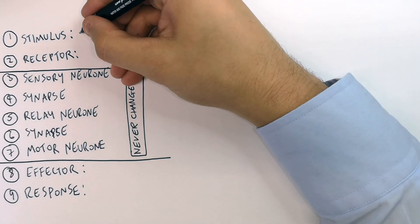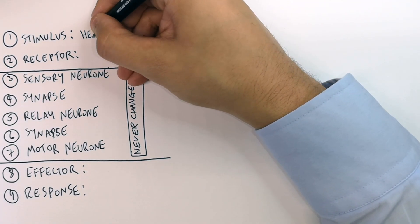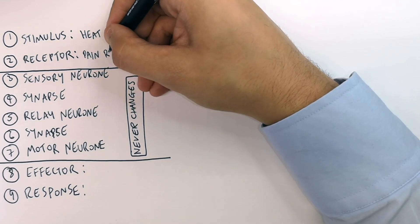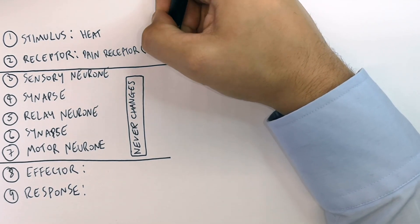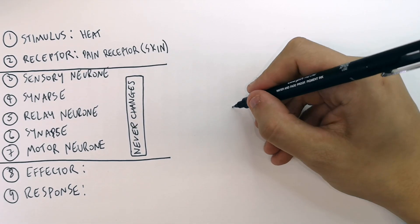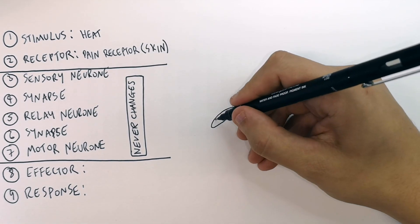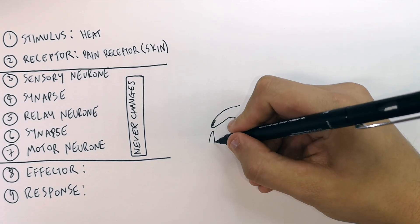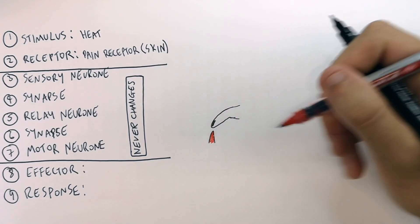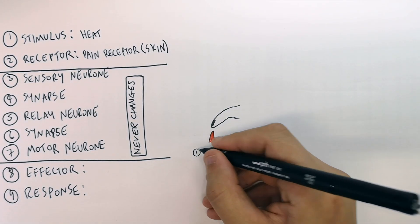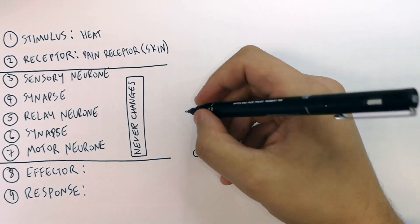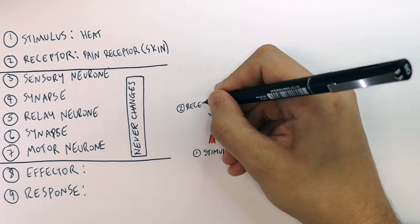In this example, we're going to give you a stimulus which is heat, and the receptor is going to be pain receptors in the skin. So we're gonna draw this out. We're firstly gonna draw a hand. Inside the skin is where you're gonna find pain receptors, and they're gonna be stimulated by the heat of a flame. So the stimulus is going to be, in this situation, the heat from the flame, and the receptors are going to be the pain receptors in the skin.